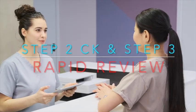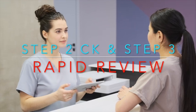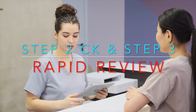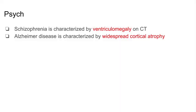Welcome to part 2 of the High Yield Rapid Review Series to increase your points on exam day for the USMLE Step 2 CK and Step 3. If you do a CT scan of a patient with schizophrenia, you will see enlarged ventricles. If you do a CT scan of a patient with Alzheimer's disease, you will see widespread cortical atrophy. This is extremely high yield.